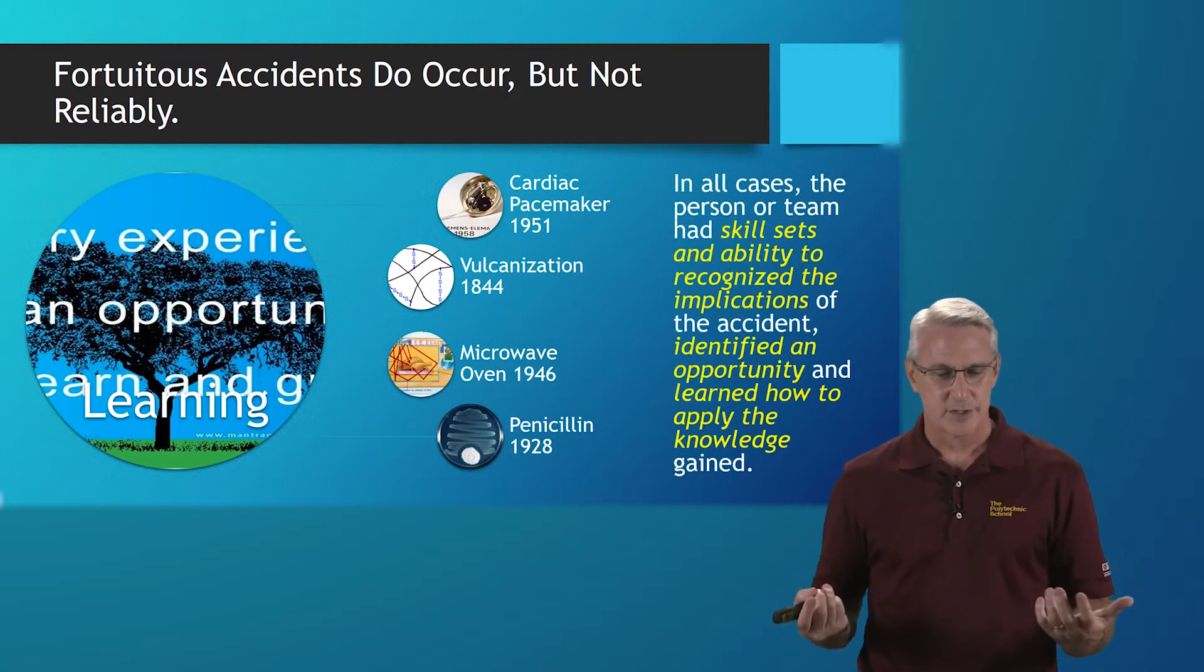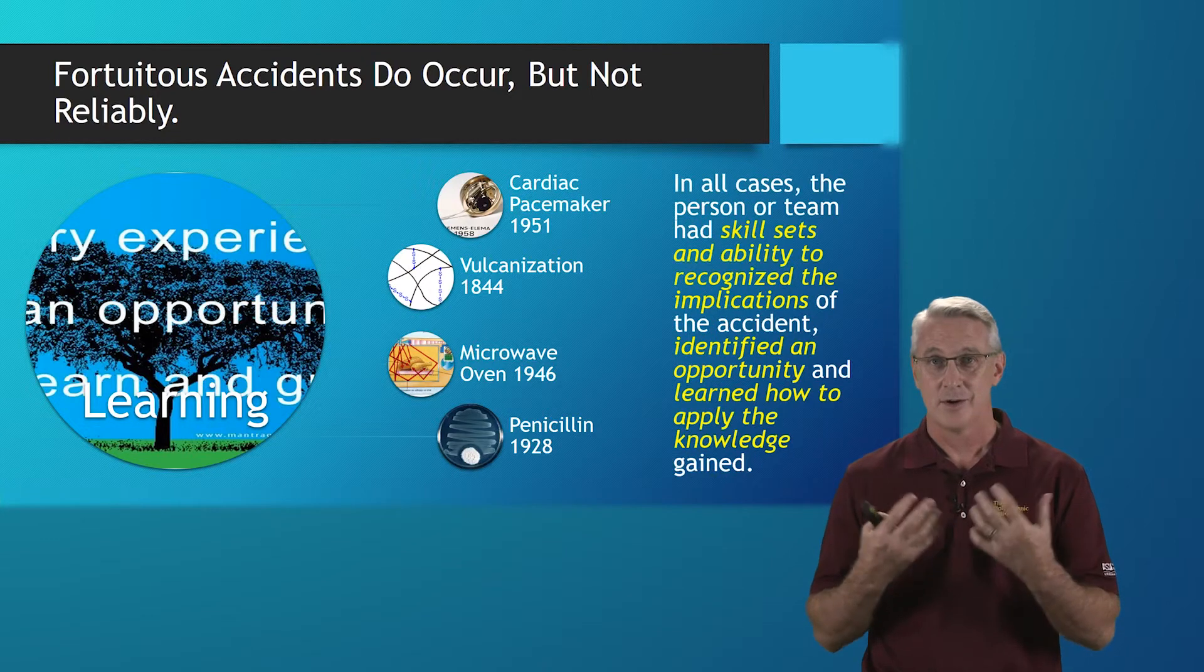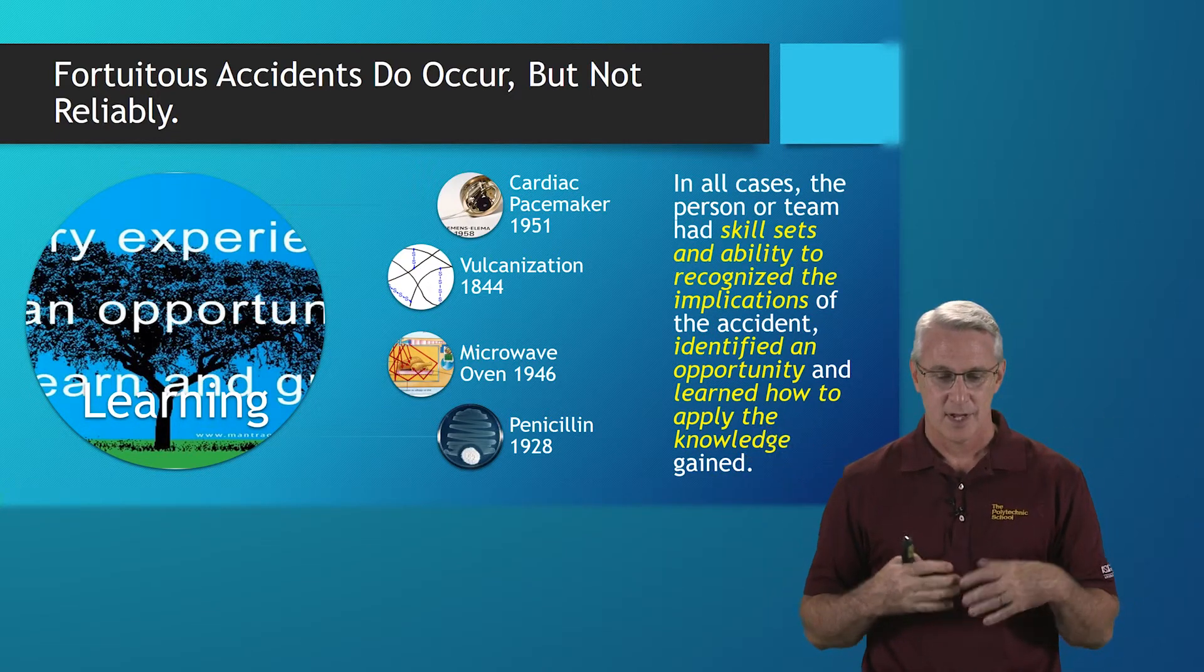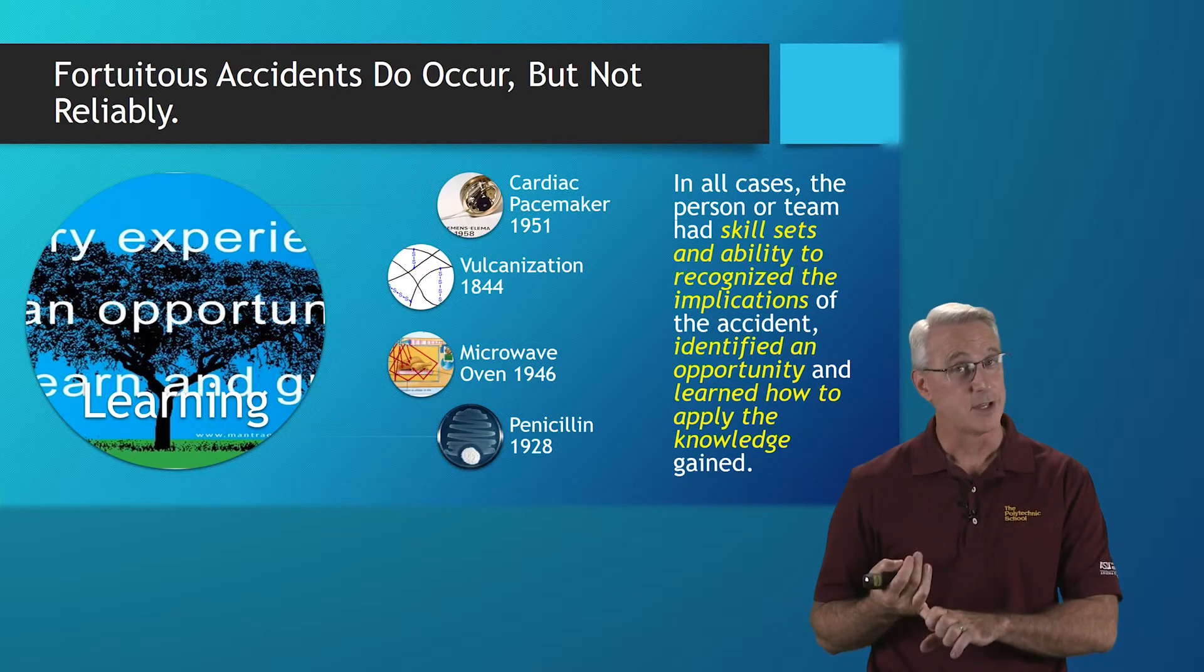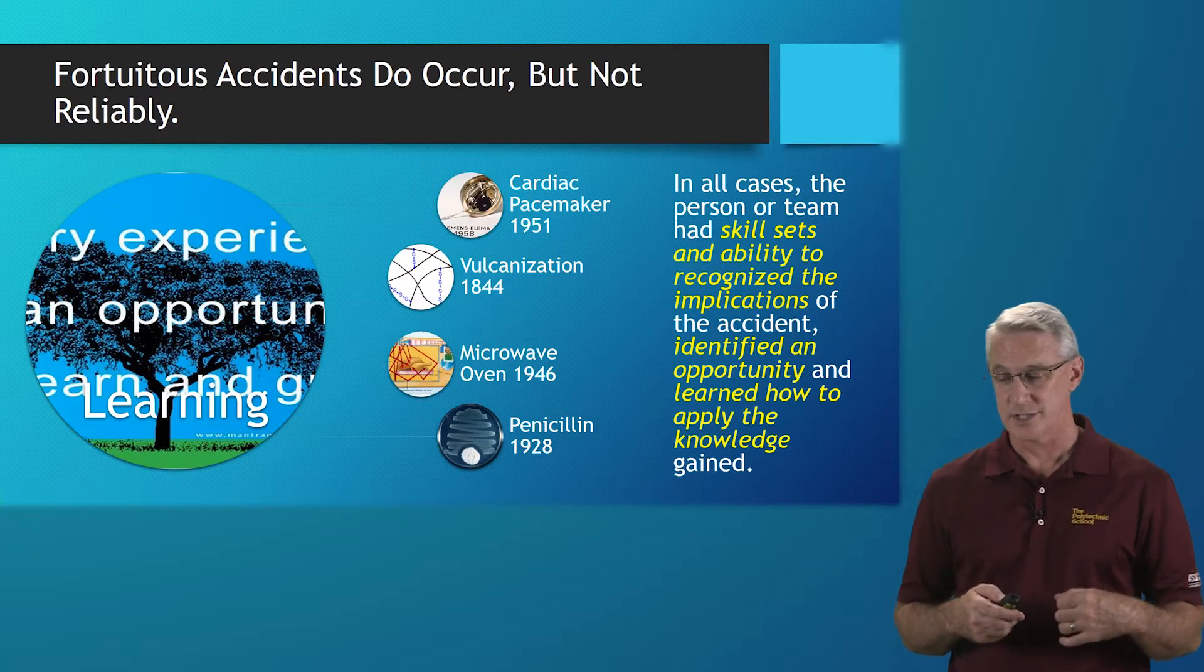In all cases, the person or team had the skillsets, the ability to recognize the implications of the accident. Without that, it would have just gone by and nobody would have observed it. Identification of the opportunity, what could they use it for, and learned how to apply the knowledge that was gained and apply it to other situations and other applications.